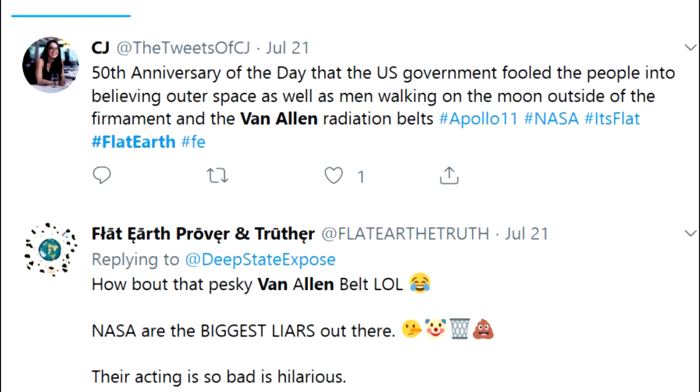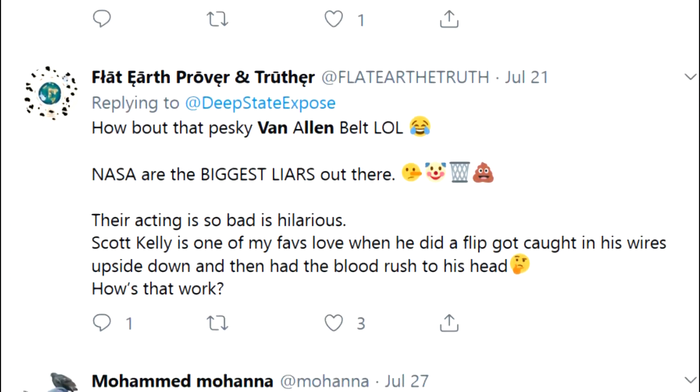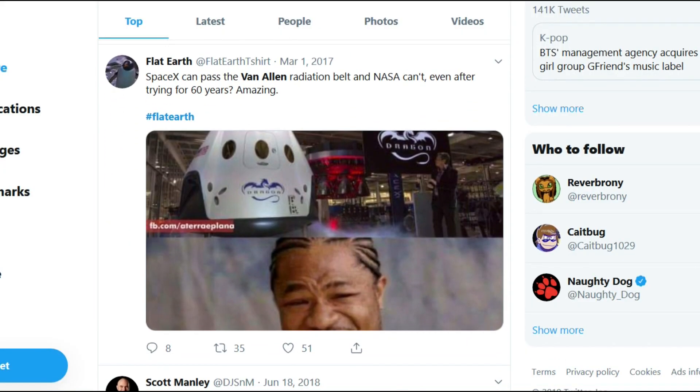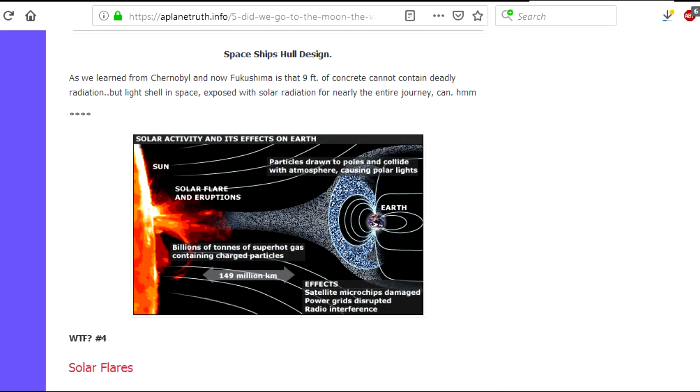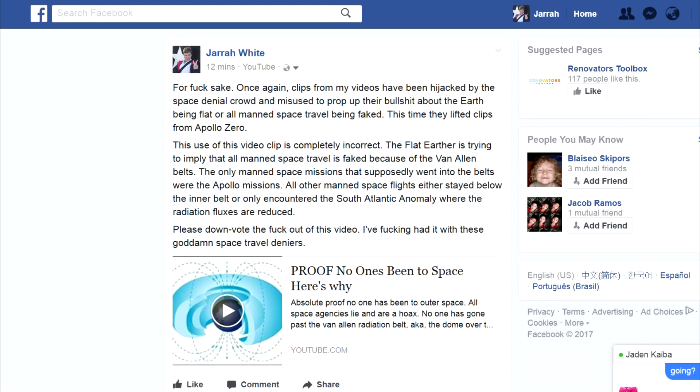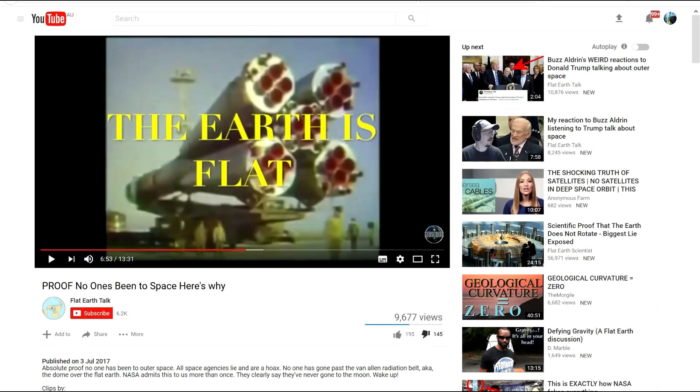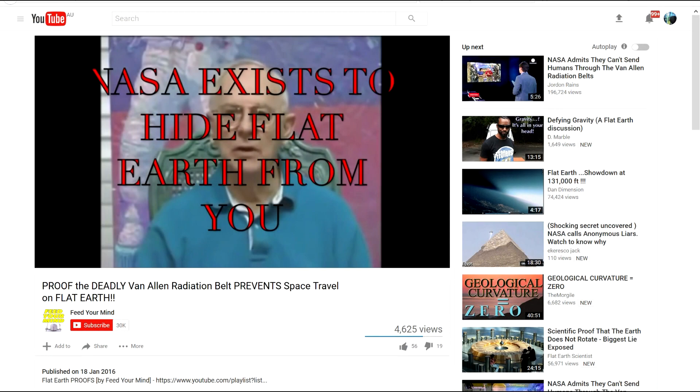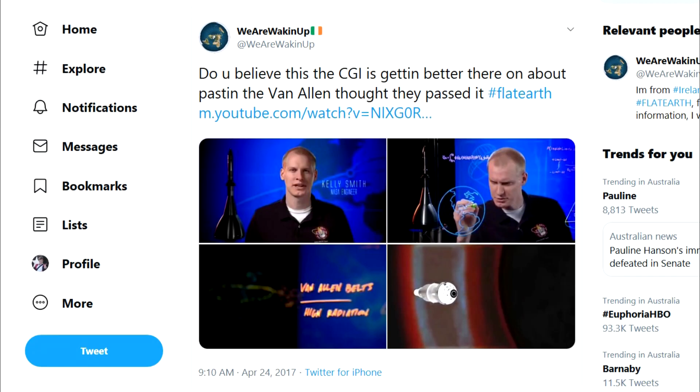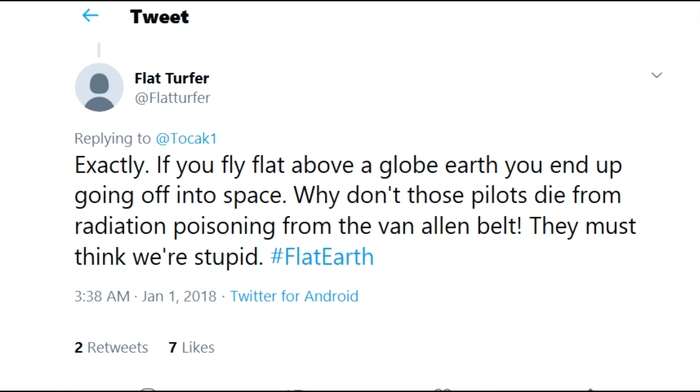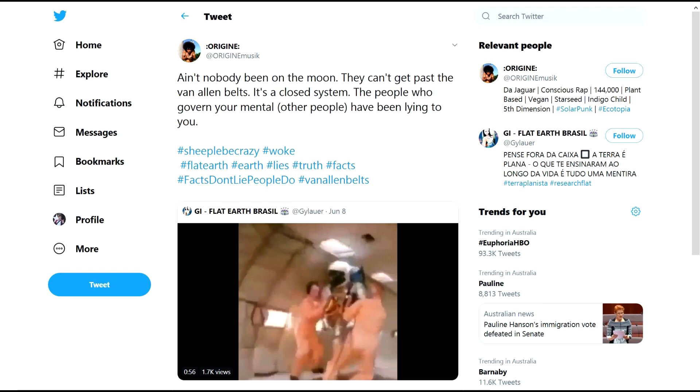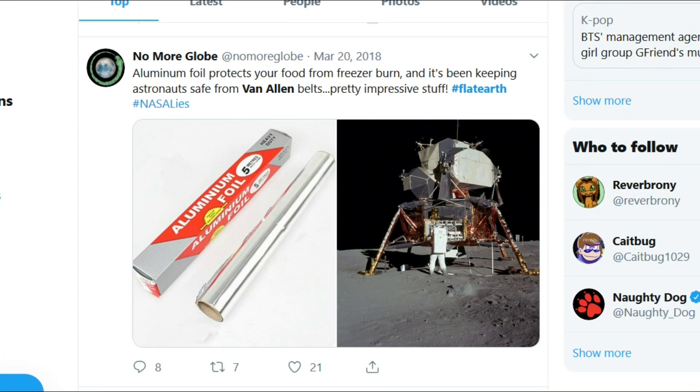Despite this, some flat earthers and space travel deniers have been stupid enough to cite the Van Allen belt as evidence for their nonsense. I have even seen some of these ill-informed people mirror some of my videos on the Van Allen belt, with flat earth erroneously added to the title or description. Only a complete idiot would cite the Van Allen belts as evidence for anything and then turn around and say that the Earth is flat and that all space travel is fake.